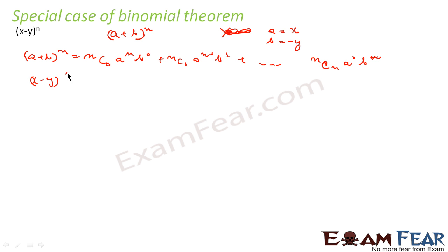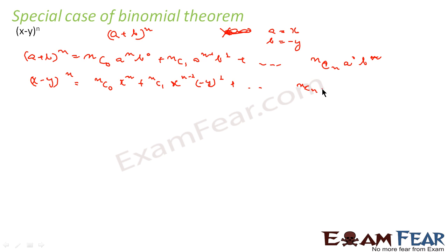So (x - y) to the power n becomes: nc0 · x^n (since b^0 = 1), plus nc1 · x^(n-1) · (−y)^1. Since (−y)^1 = −y, this term becomes minus nc1 · x^(n-1) · y.